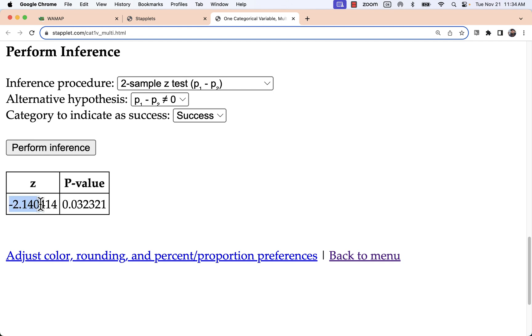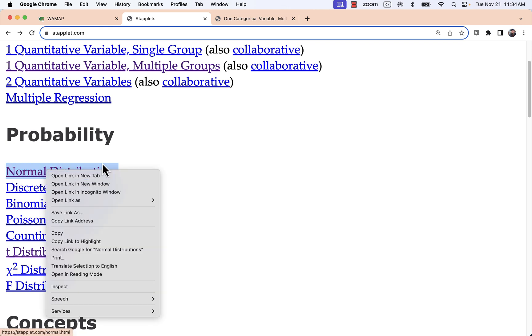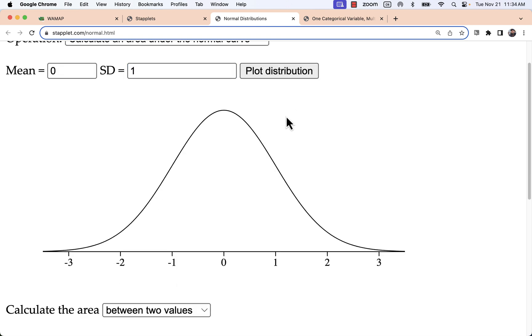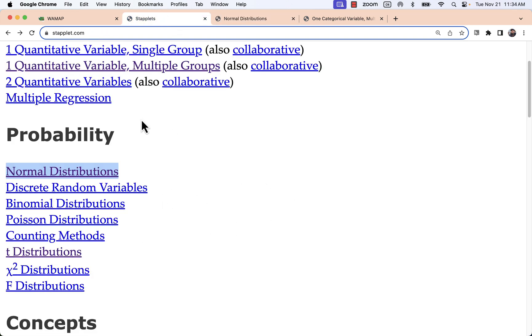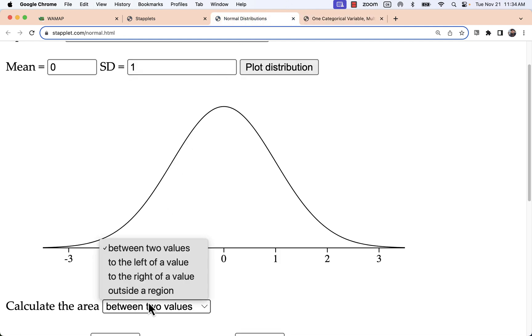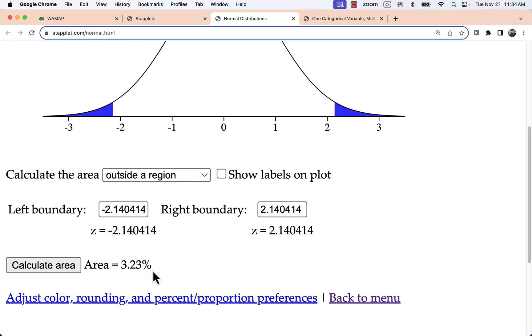Now my z score is negative 2.140. I've got my p value here. If I need more precision on the p value I can go to a normal distribution. There I set the mean of 0 and standard deviation of 1 to look at a z curve. And I could enter in my z score here. And since it is a two tail I will do the outside region with both the negative and the positive. And there I can get an area or I can do just the left or right.